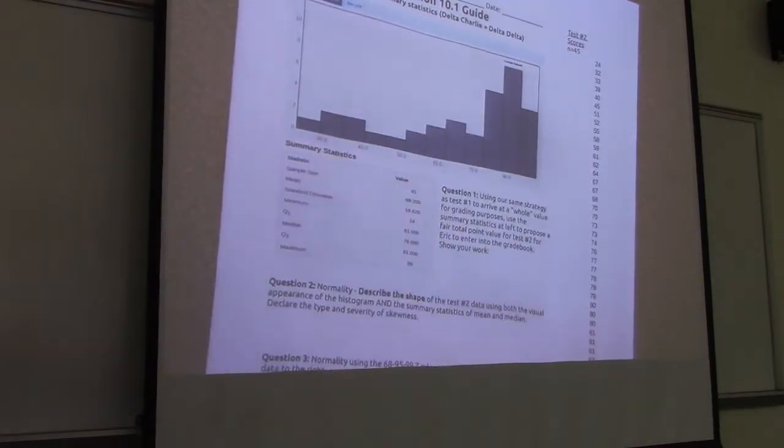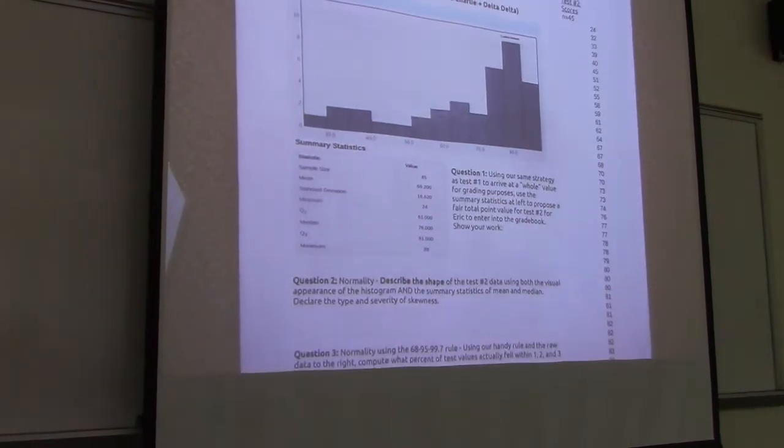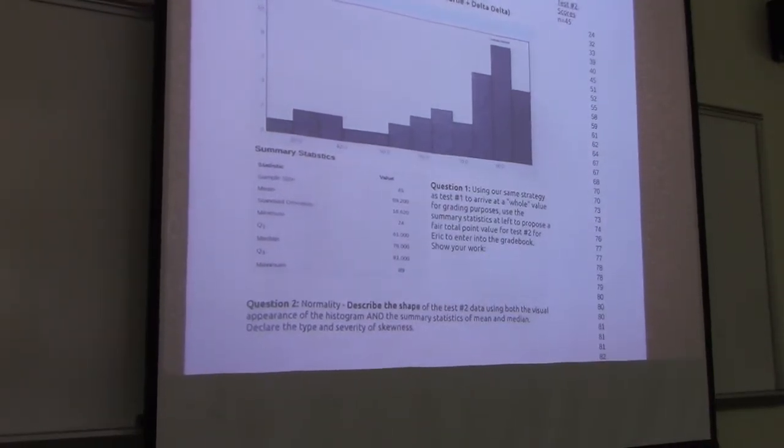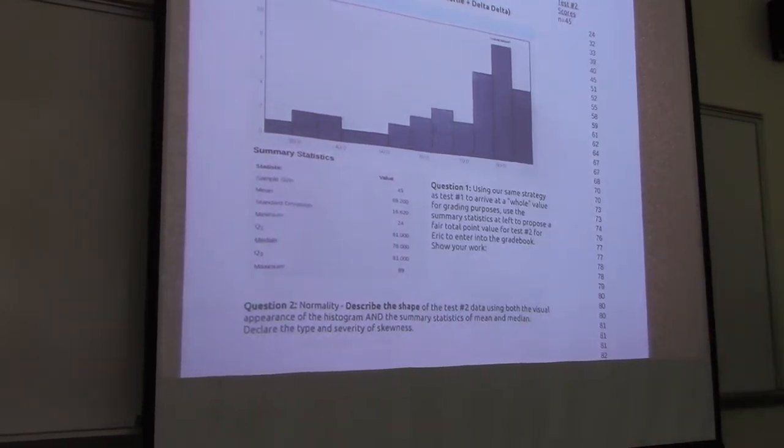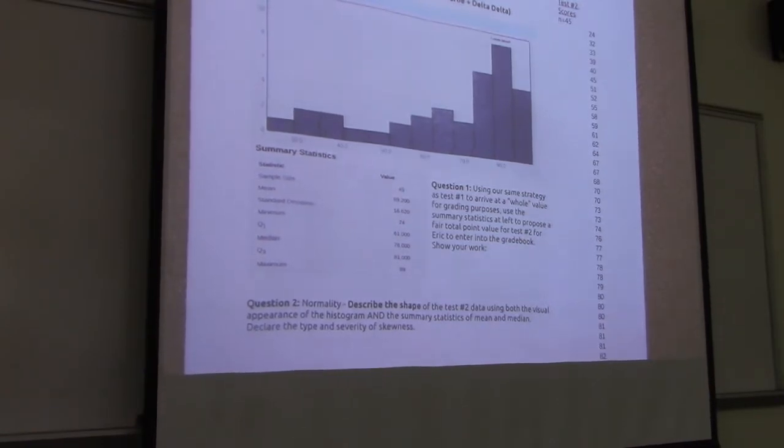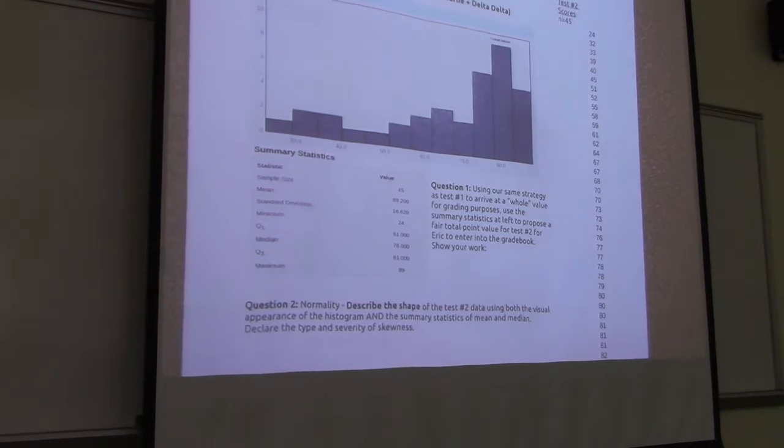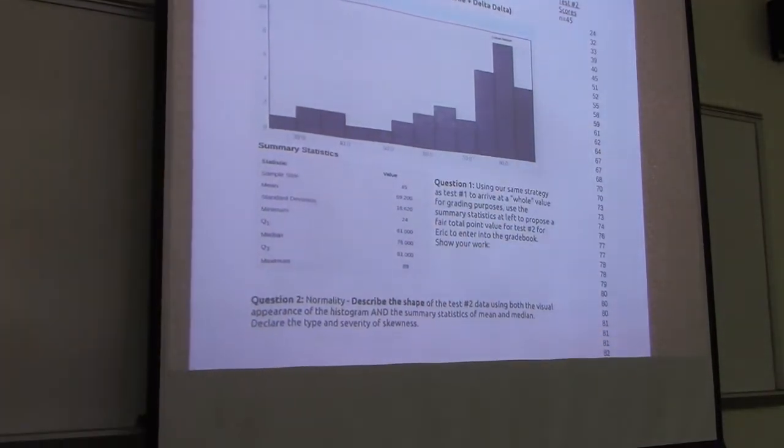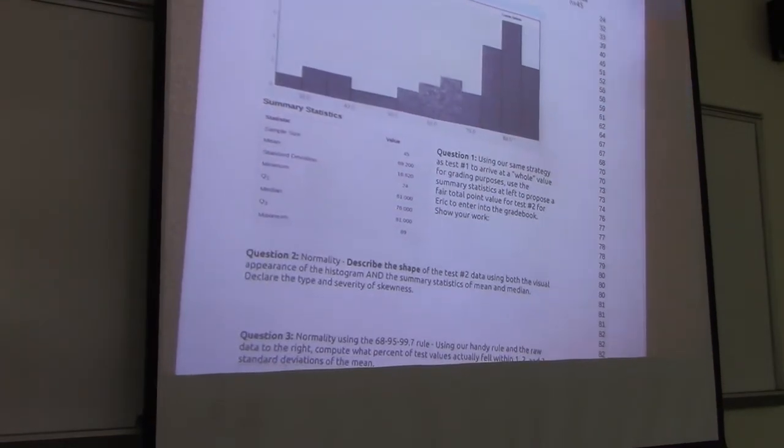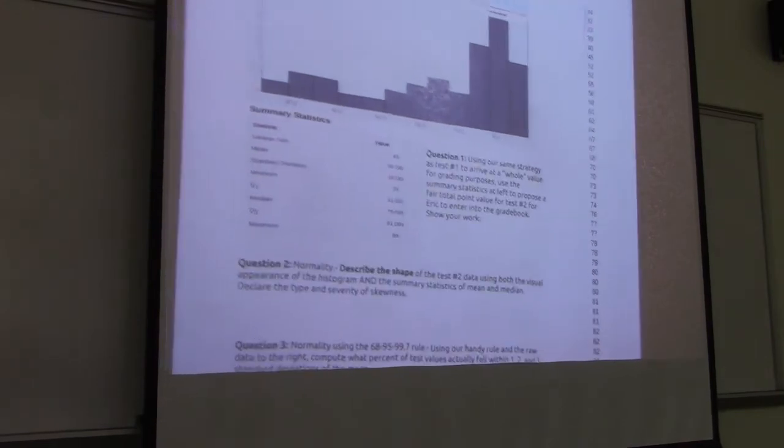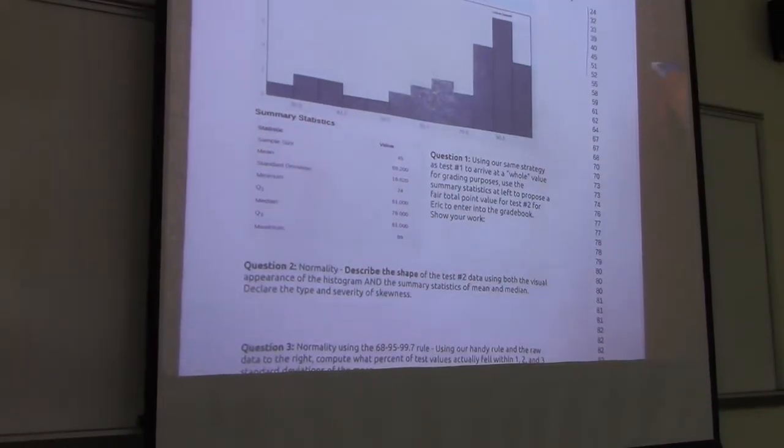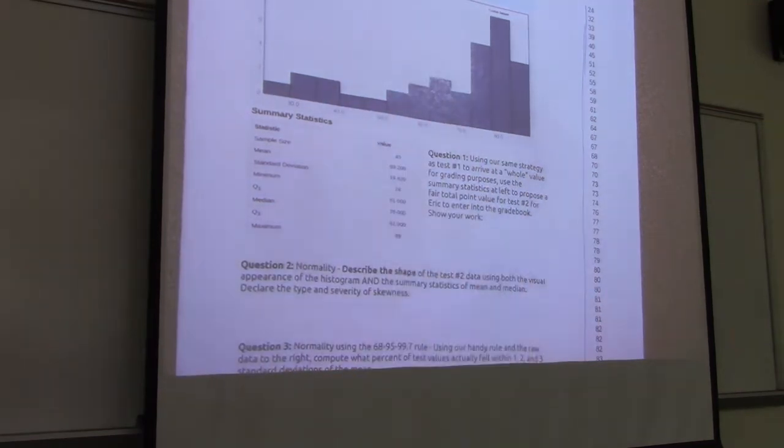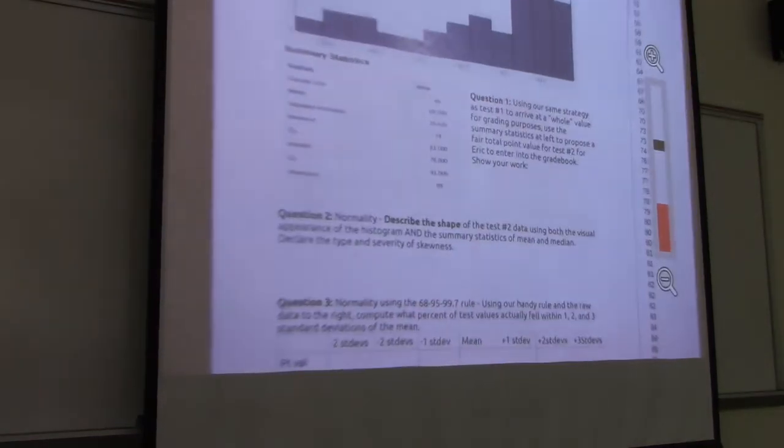To do that we're going to get a chance to analyze data from test number 2. So on the top of today's packet is the distribution. And on the right hand side are the raw scores. So when possible I like to use actual data. And this is about as actual as it comes. Since this is data about us. So let's take a look at where on the top of your test you'll see a number has been written. That number is not a percent, that number is a raw score of points that I was able to grant based on the scoring key.